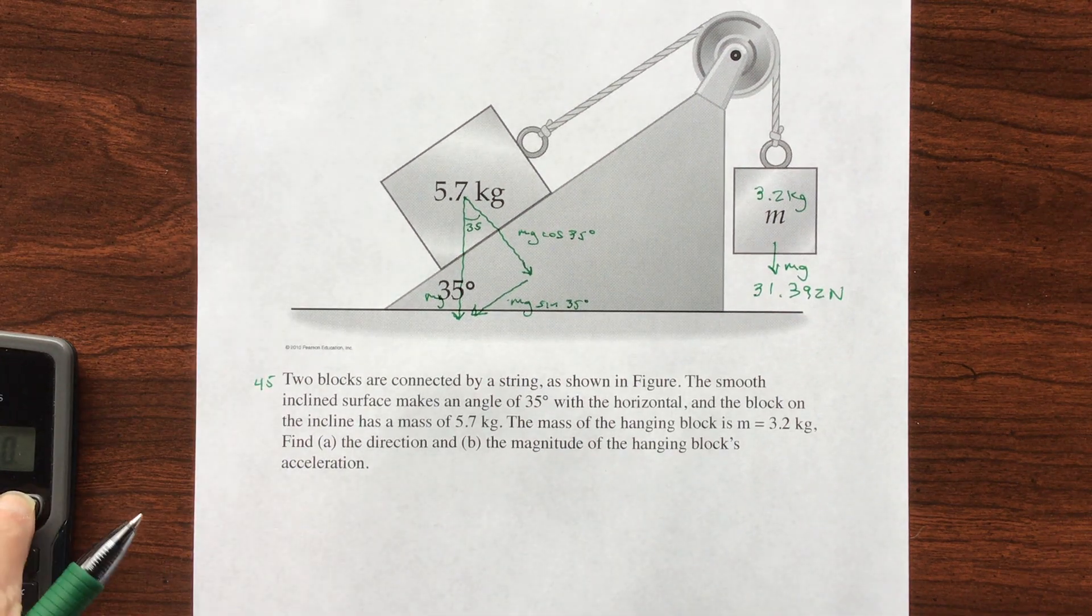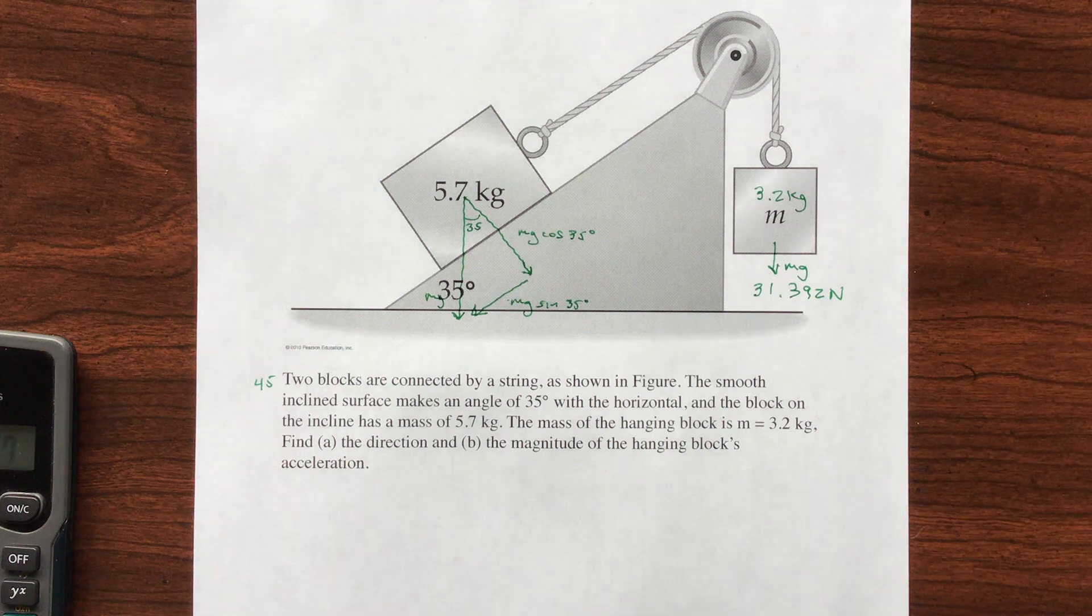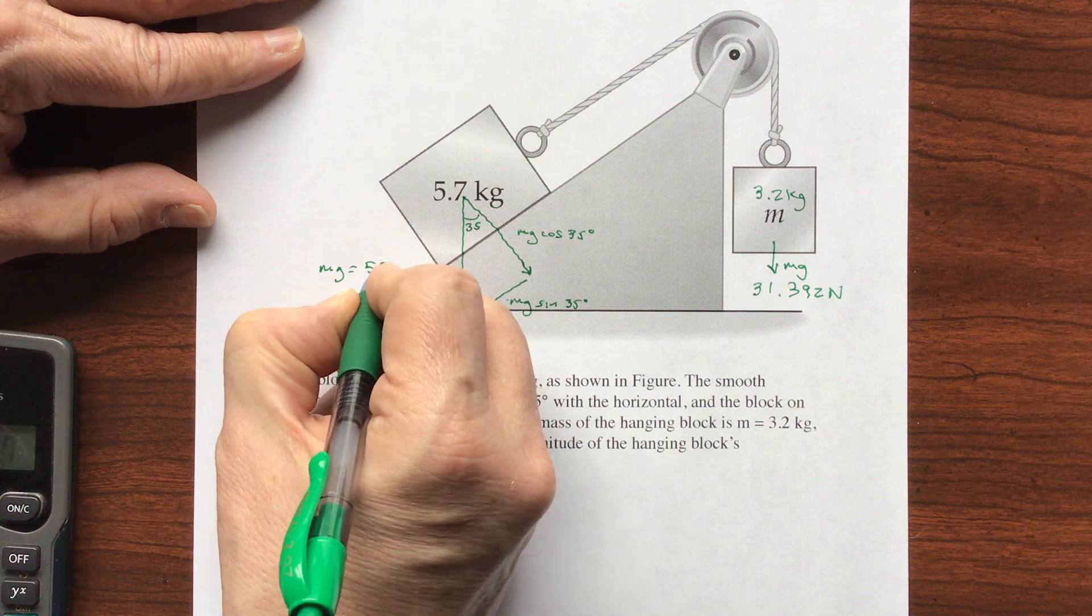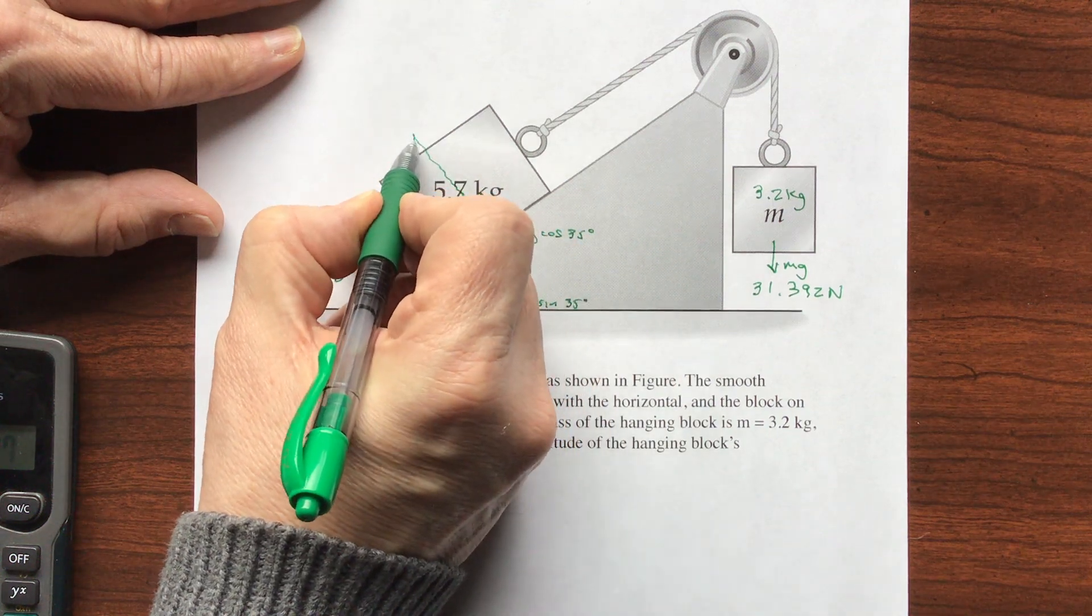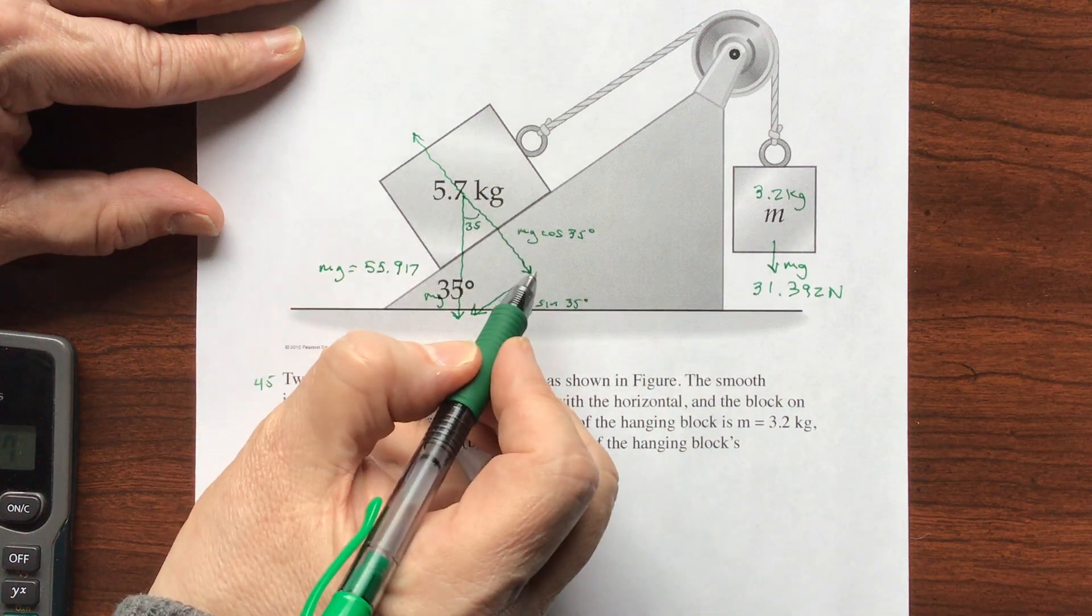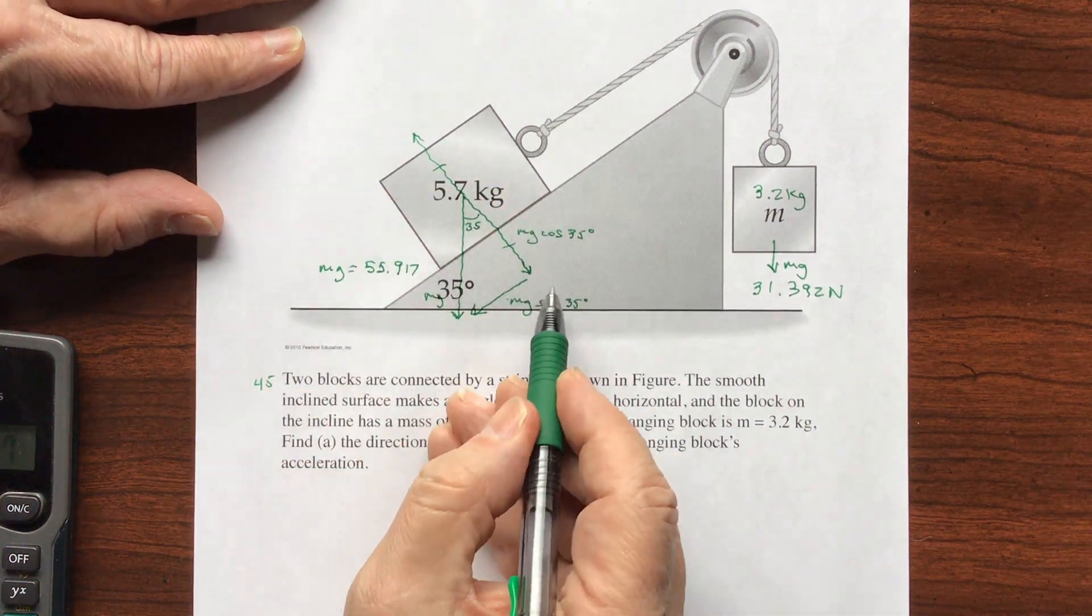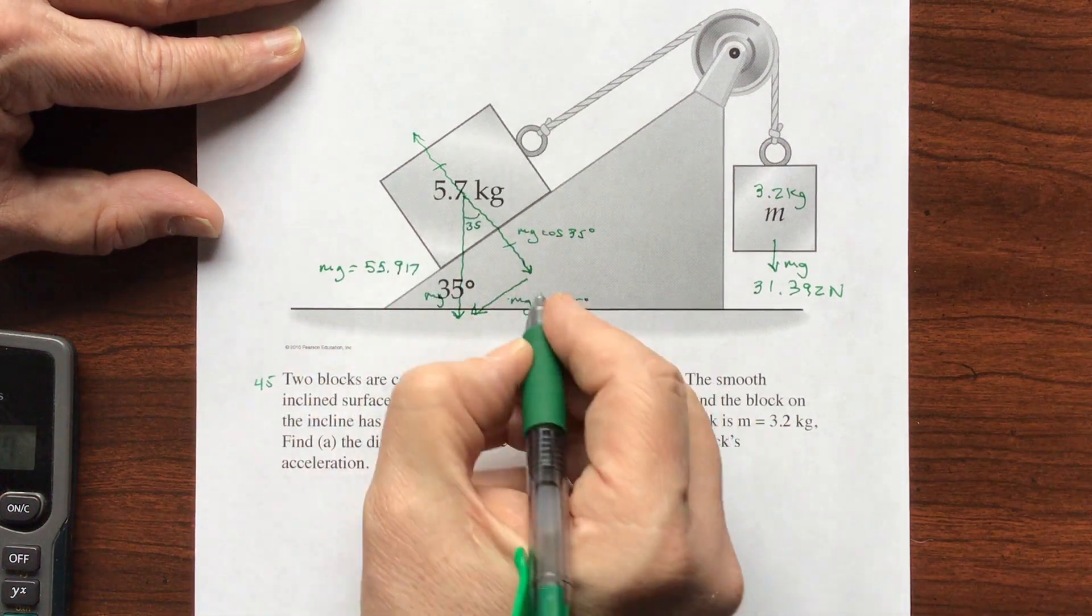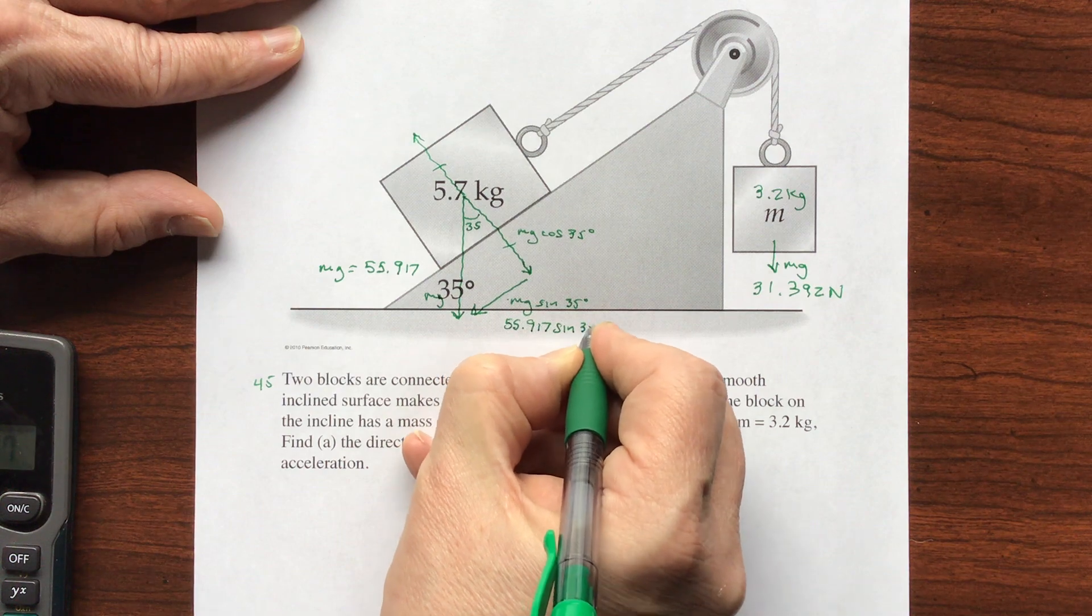And this is mg times the cosine of 35 degrees. And we need to know what mg is. So mg is 5.7 times 9.81. We have mg as 55.917. Well, there's two forces here. There's one going up supplied by the ramp. The ramp is pushing back into the block, and the block is pushing with the cosine. So these two are going to cancel each other. So this and this is gone. The only force that's actually doing something to this block is making it go down the hill, and that is mg times the sine of 35.